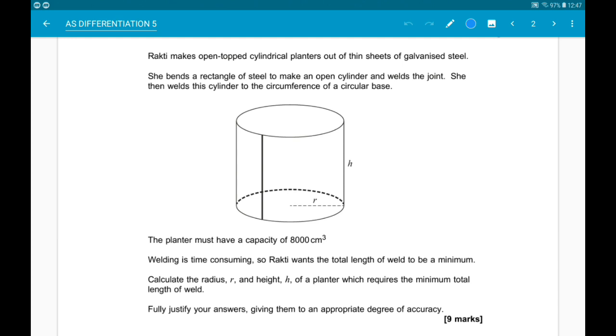Welding is time consuming, so Rakki wants the total length of weld to be a minimum. Our job is to calculate the radius R and height H of a cylinder which requires the minimum length of weld. Fully justify your answers, giving them to a suitable degree of accuracy. Alright, lots to do.